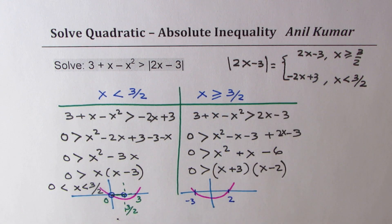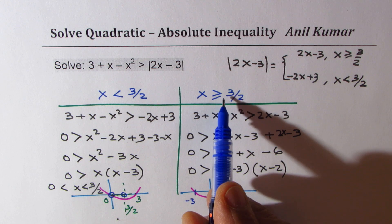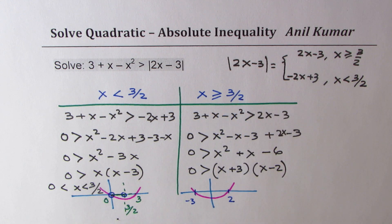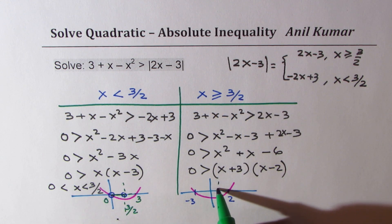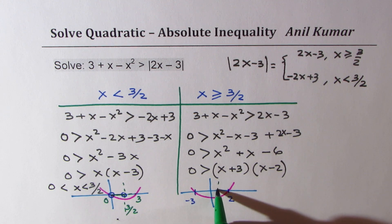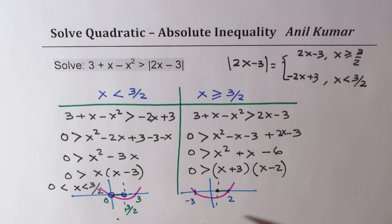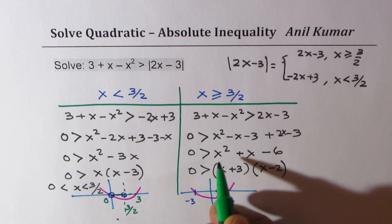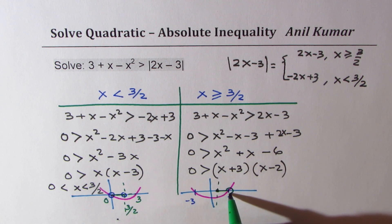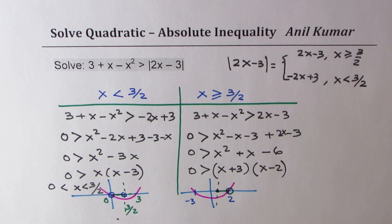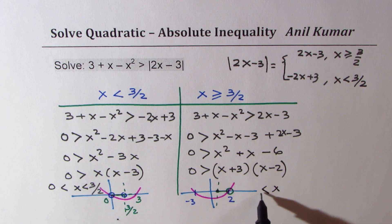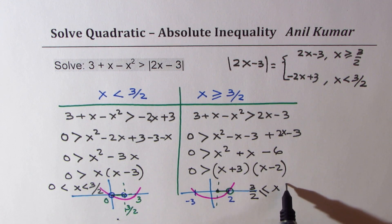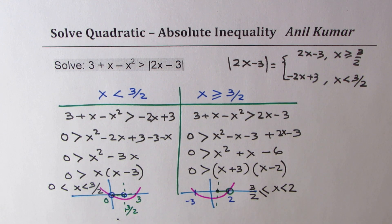We are talking about interval which is greater than or equal to 3 by 2, right? So that means now we will only consider the solution from here, including this point, 2. Since it is greater than, we will not include 2. So here, we get the solution as x between greater than or equal to 3 by 2 but less than 2.